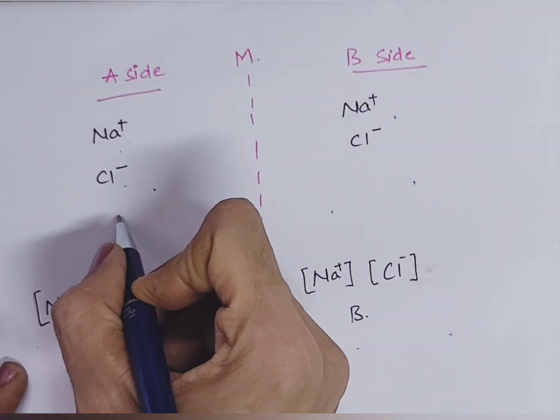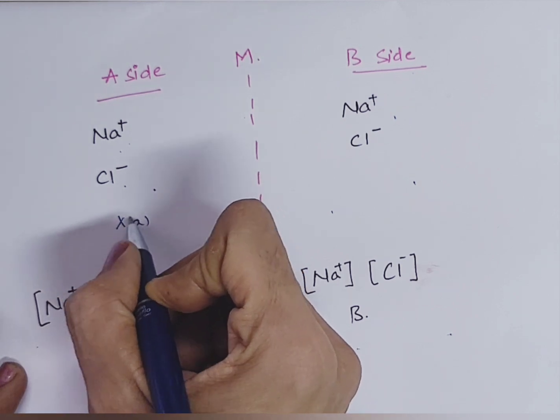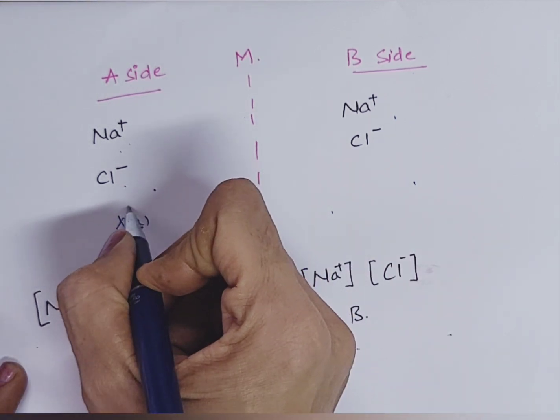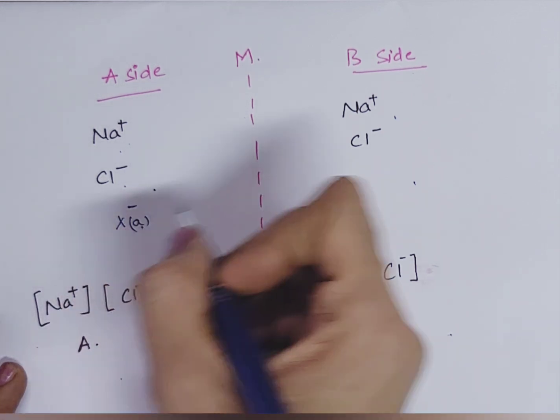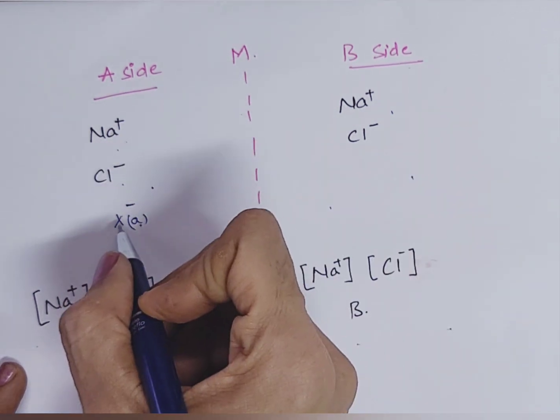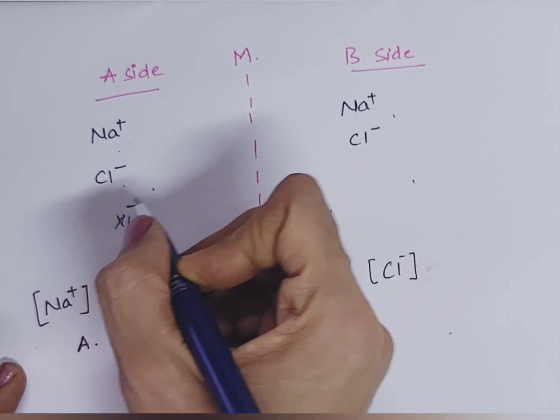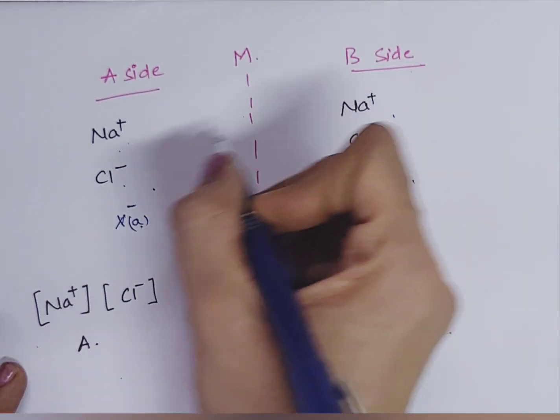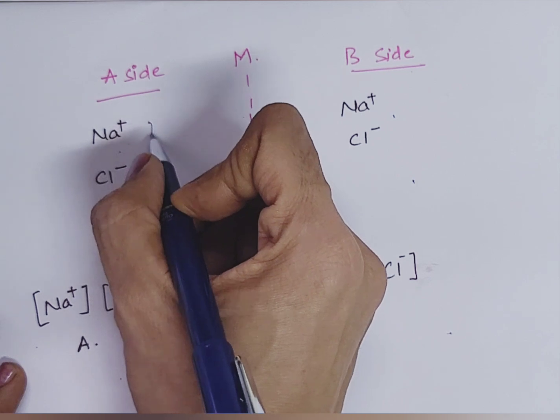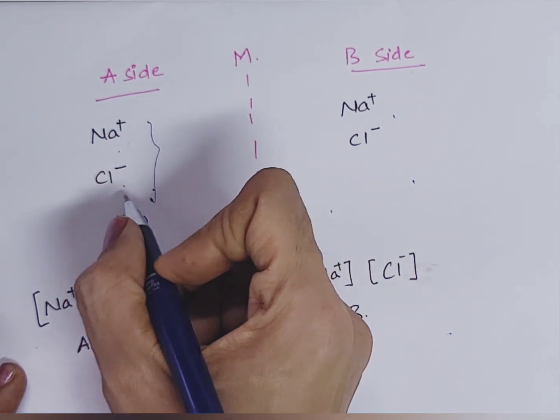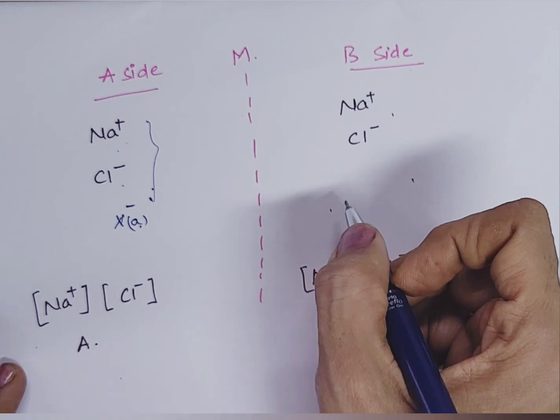Suppose we are adding X on the A side. When we are adding X on the A side, X is an anion. So what happens? Because X or anion is more on A side, the distribution of cation and anion which are diffusible, sodium and chloride, that changes. Why? Because that is to create a state of equilibrium.